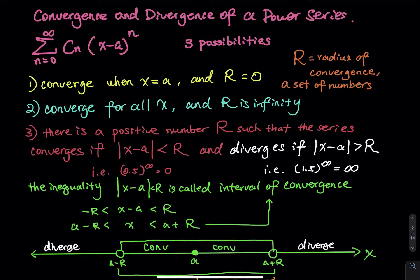There is a positive number R such that the series converges if the absolute value of x minus a is less than R. You have that in almost every single problem. The first problem in the next video is case three. Converges if |x-a| < R and diverges if |x-a| > R.